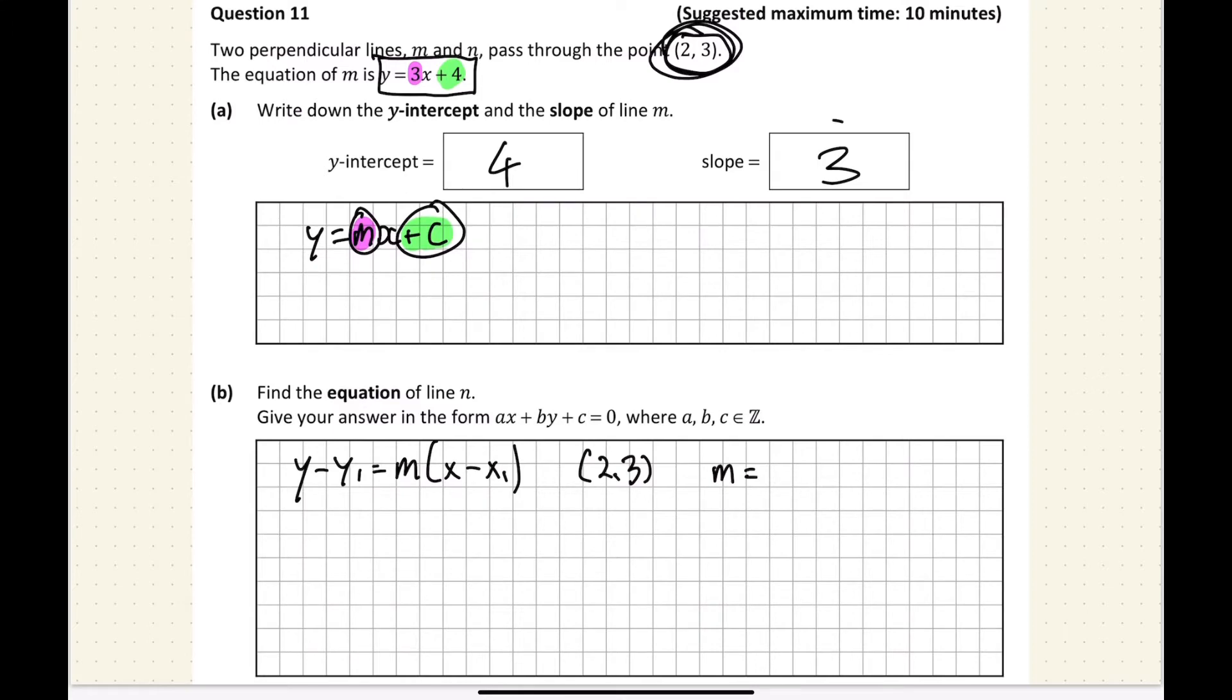Now, the problem with the slope is we can't use this guy because that guy is for m. So we're told that they're perpendicular. And perpendicular slopes, when multiplied by each other, should give minus 1. So in other words, 3 over 1 multiplied by minus 1 over 3 has to give me minus 1, which it does. Therefore, I get minus 1 over 3 is the slope of this line here.